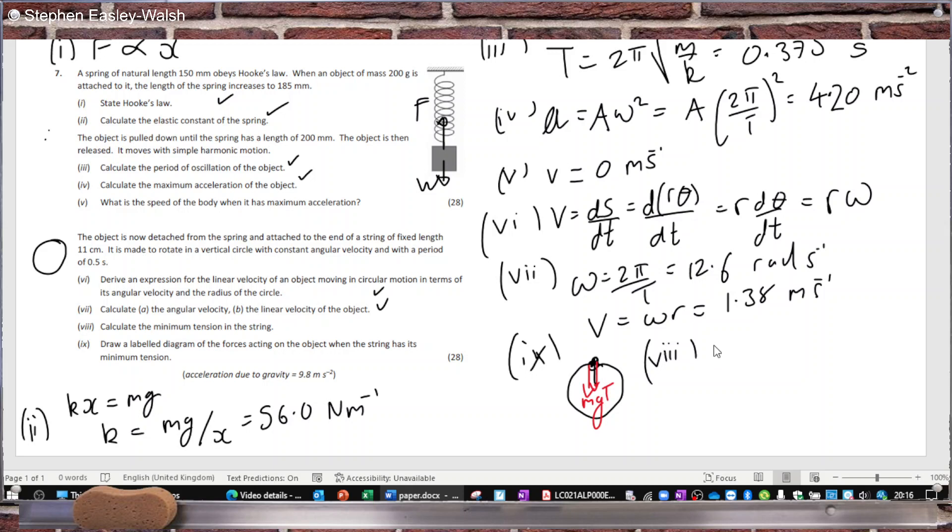The tension plus mg equals the centripetal force, which is m times omega squared times r, or mv² over r. So T equals mv²/r minus mg. With M = 0.2, that's 1.51 newtons.